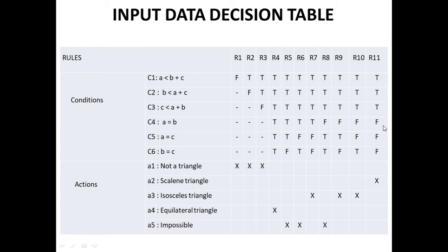...just 11 rules for the triangle problem. To remember the formula: for n conditions it is n×2 minus 1. So for six conditions: 6×2 minus 1 = 12 minus 1 = 11 rules total.